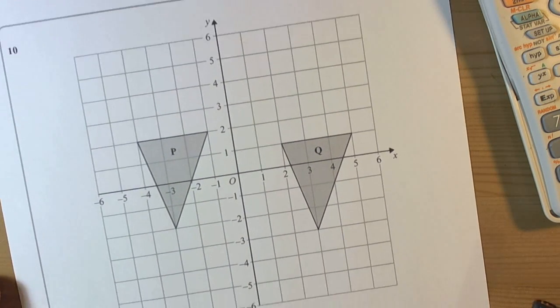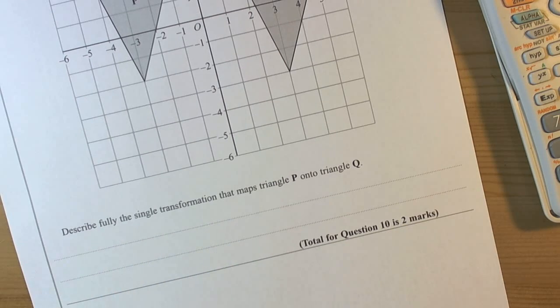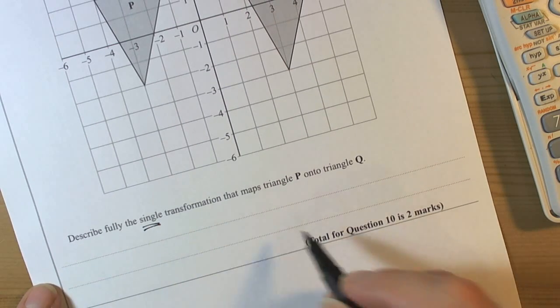This question has got some shapes on a grid, on a squared grid, and it says describe fully the single transformation. There's the key: single transformation.